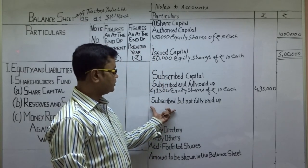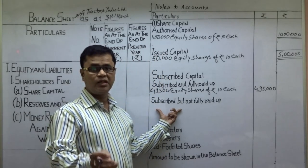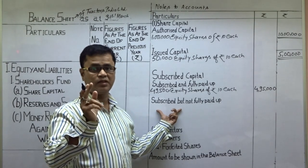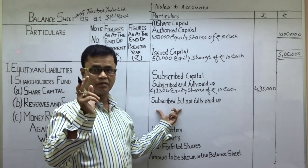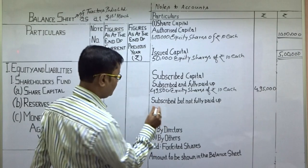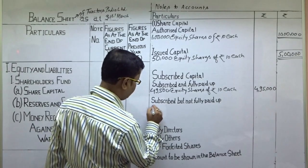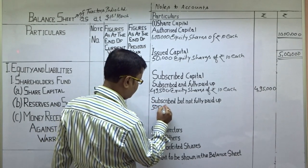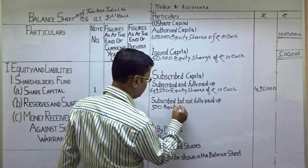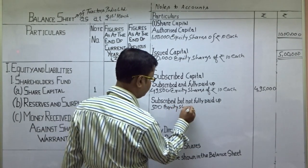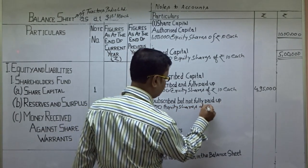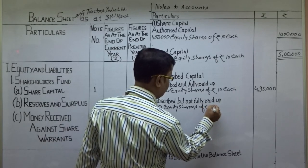Subscribed but not fully paid up — shareholder ने पैसा नहीं दिया — उनके पास number of shares कितने हैं — 500 shares। 500 equity shares of rupees 10 each — company को कितना मिलना चाहिए था।